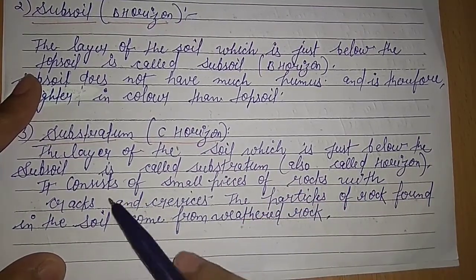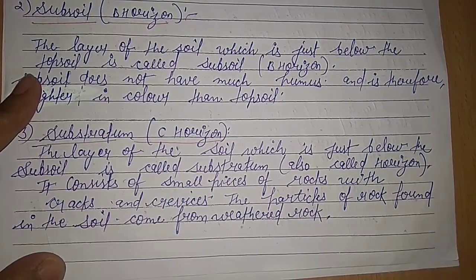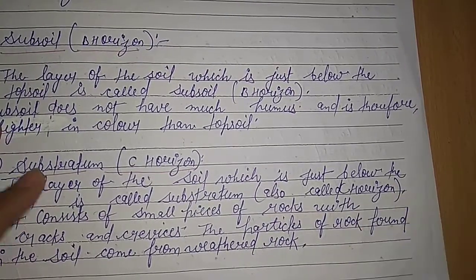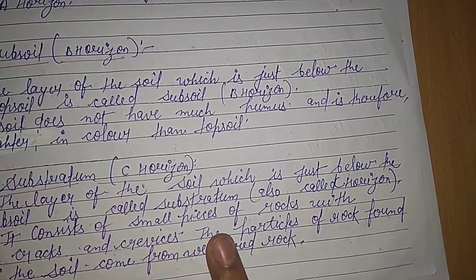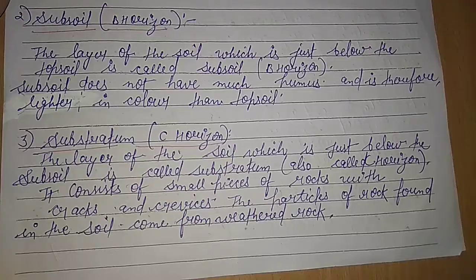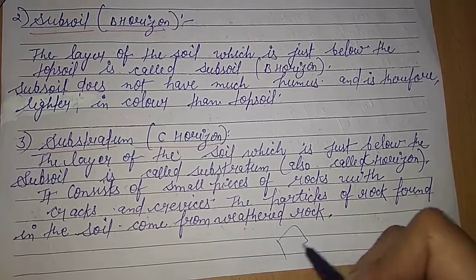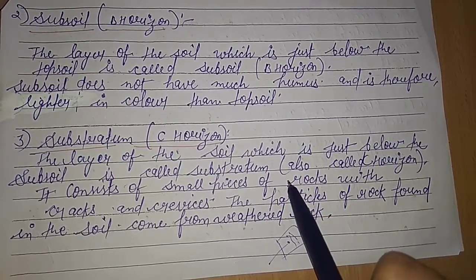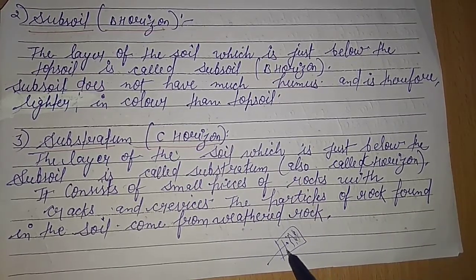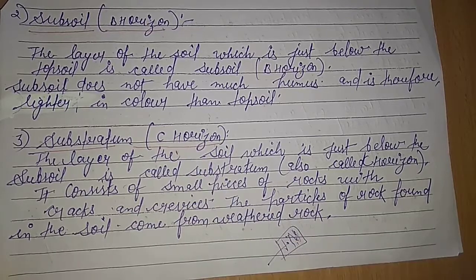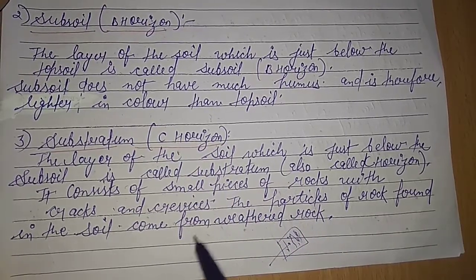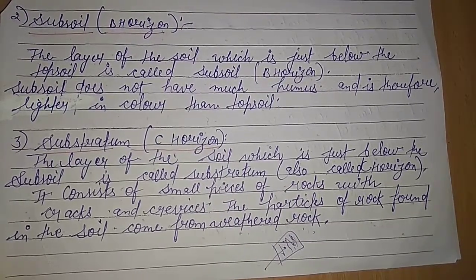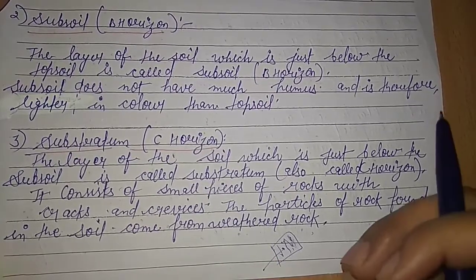Below the subsoil is the substratum, also called C horizon. It consists of small pieces of rocks with cracks and crevices. Cracks and crevices means crackings found in the small pieces of rocks in the C horizon layer. The particles of rock found in this soil come from weathered rock, as weathering is the breakdown of large rocks into smaller particles.